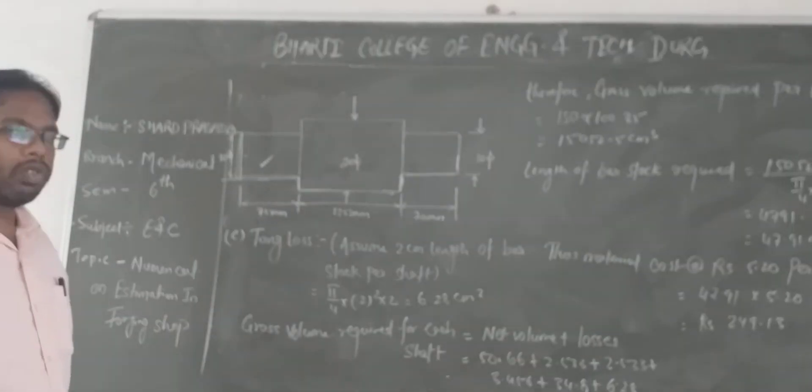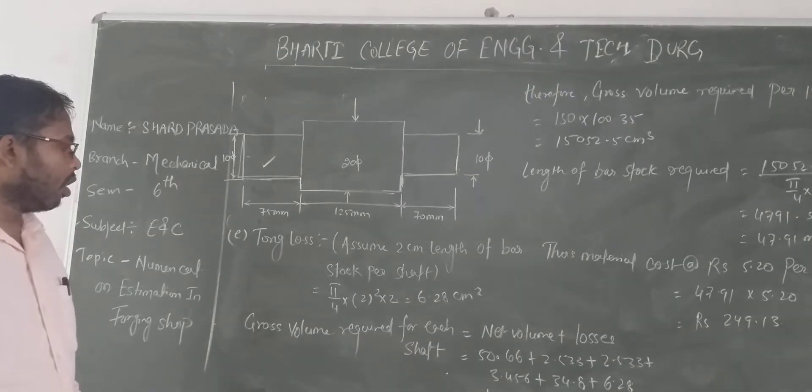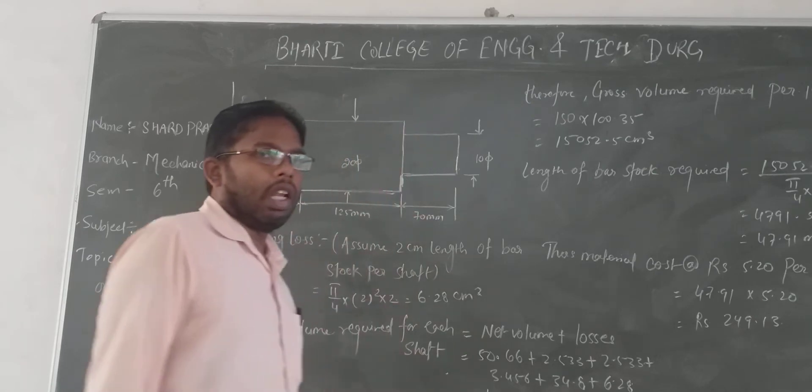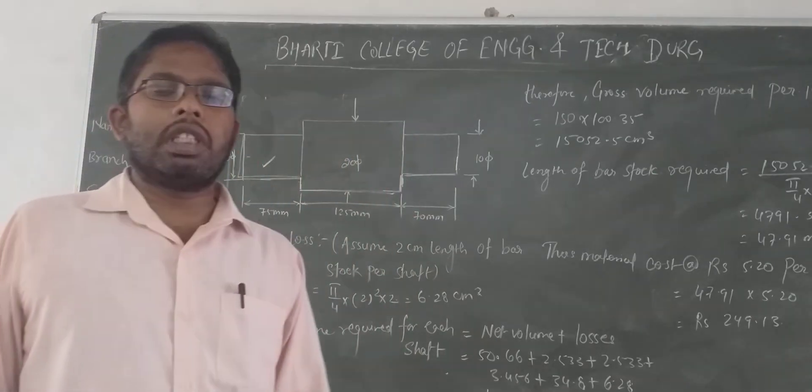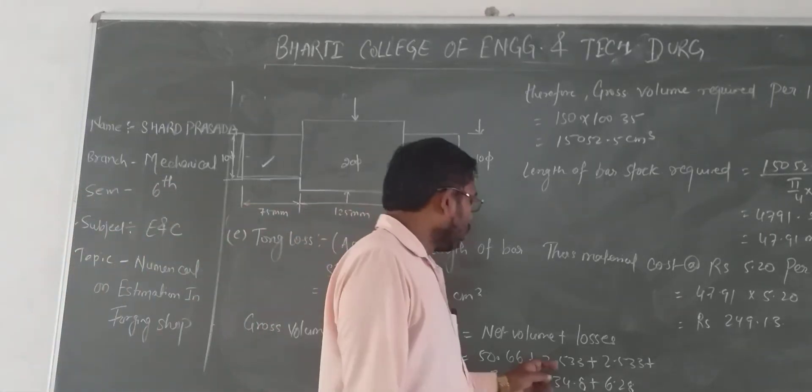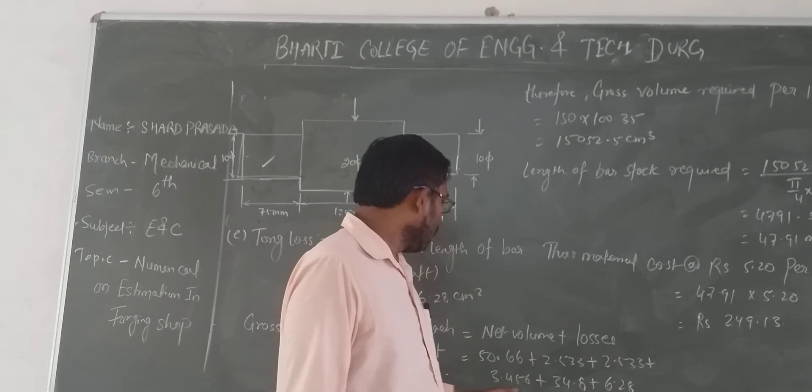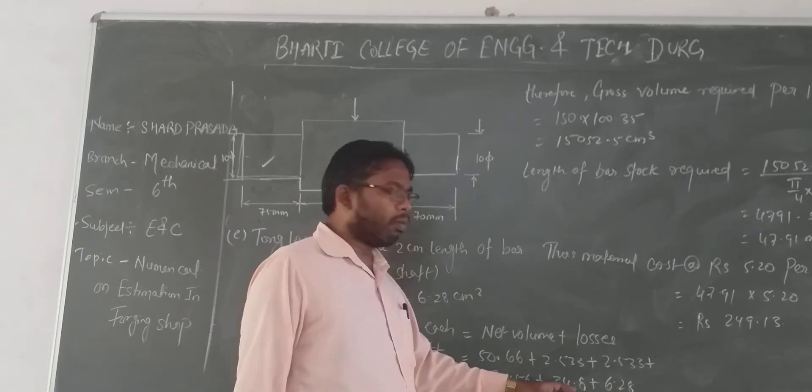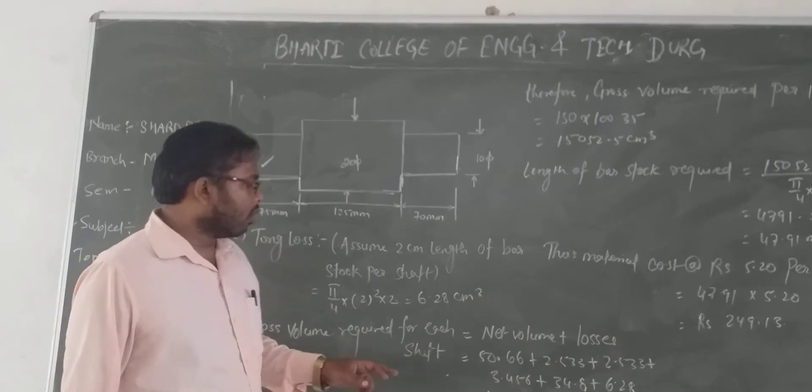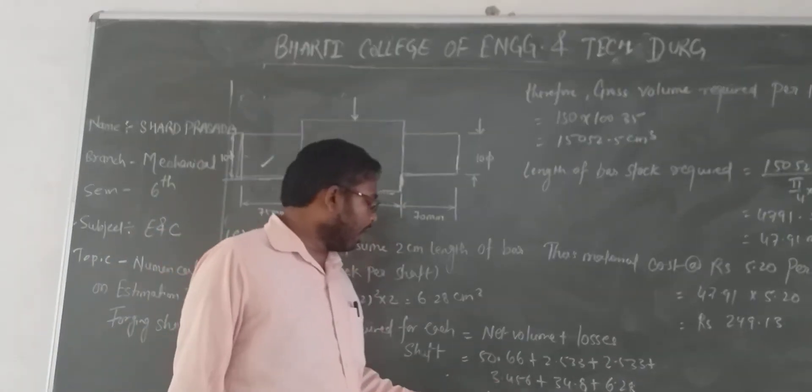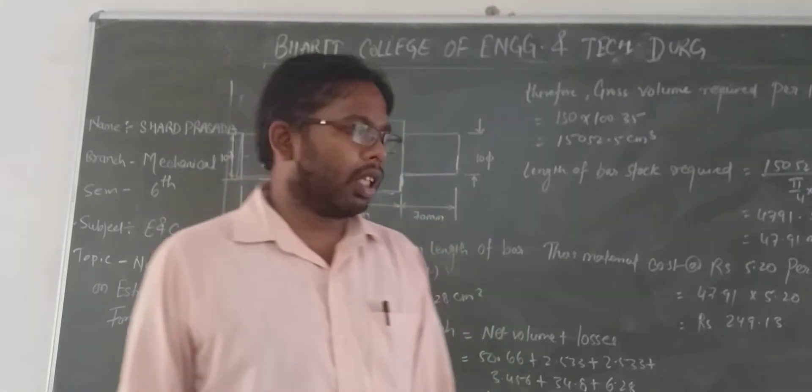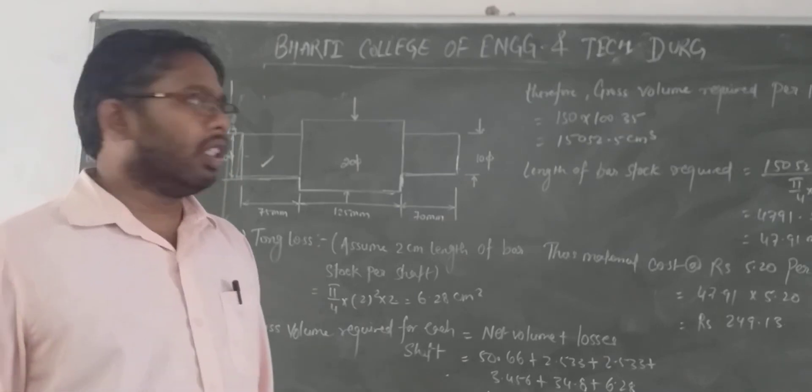Gross volume required for each shaft: gross volume equals net volume plus gross losses. Net volume we calculated as 50.66, and the losses were 2.533, 3.546, 34.8, and the total loss is 46.269. So gross volume required for each shaft is 100.35 cm³.